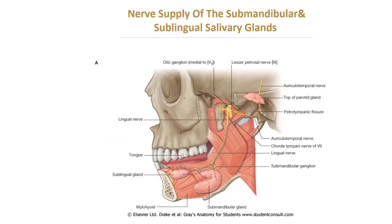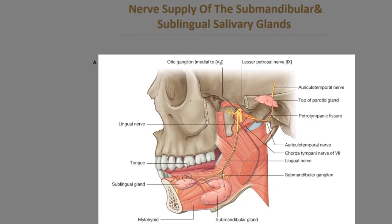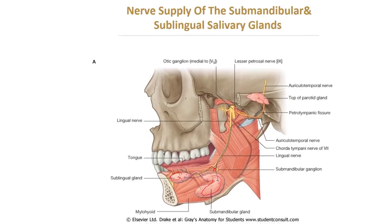In the diagram, this is the lingual nerve and this is the chorda tympani, which joins the lingual nerve directed to the sub-mandibular and sub-lingual salivary glands. This is the sub-mandibular parasympathetic ganglion, suspended on the lingual nerve.